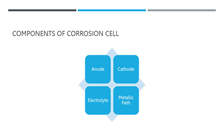The anode is the corrosion cell's most visible component — this is where corrosion takes place. In a corrosion cell, the anode is the location where electricity is transferred chemically from the metal's surface to the electrolyte. This chemical process is known as an oxidation reaction in which the metal loses an electron and joins forces with a different element, typically oxygen. Iron oxide is the end product in the case of steel.